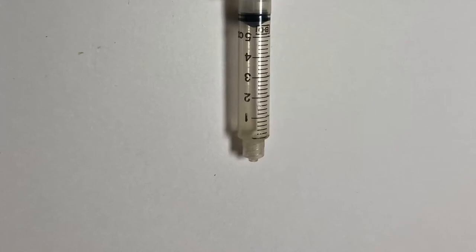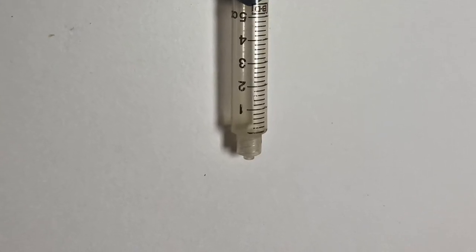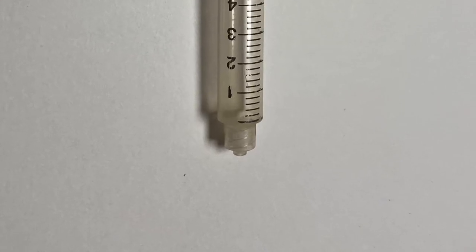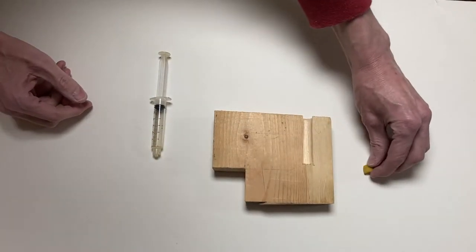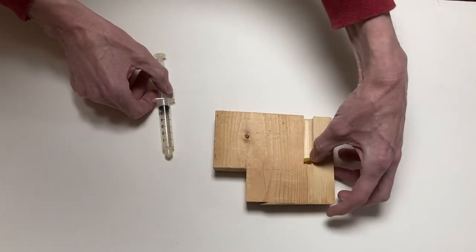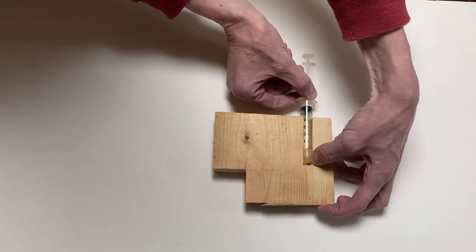Next, we want to seal the end of the syringe. So if your syringe comes with a cap or a stopper, that's perfect, use that. If it doesn't like ours, use a small piece of rubber you can press the tip of the syringe into.